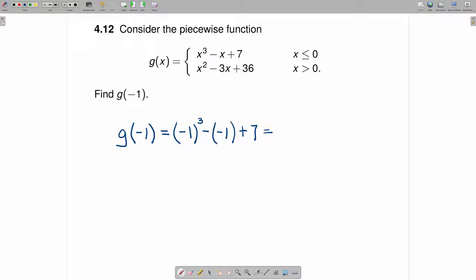And negative 1 cubed is negative 1 multiplied by itself three times. And negative 1 times negative 1 times negative 1 is negative 1. Minus a minus 1 is the same as plus 1 plus 7. So negative 1 plus 1 is 0, and 0 plus 7 gives you 7.